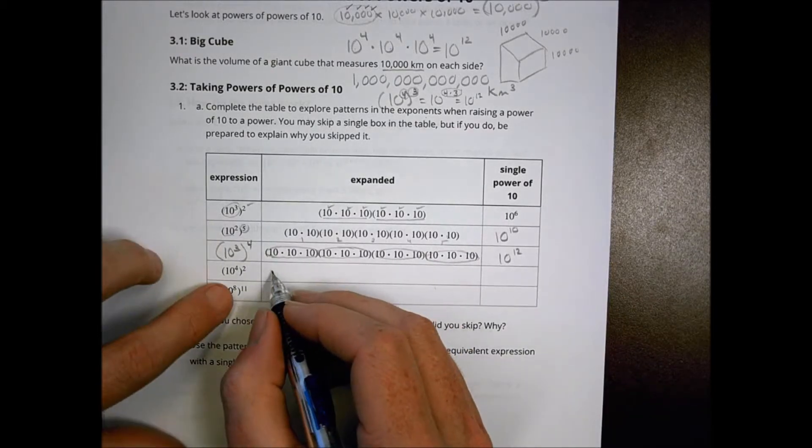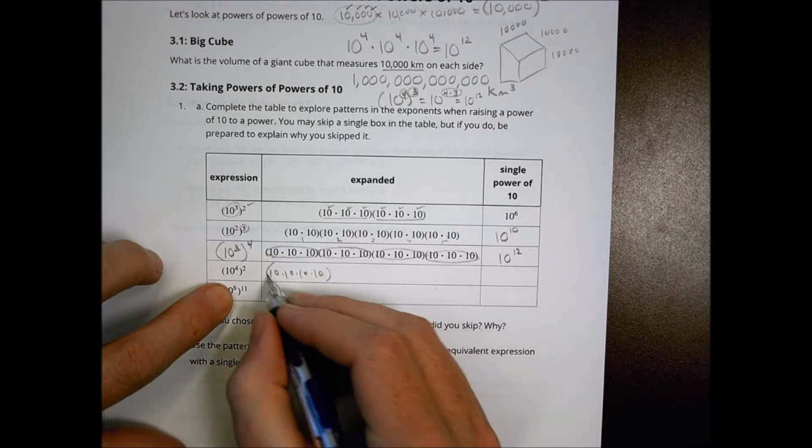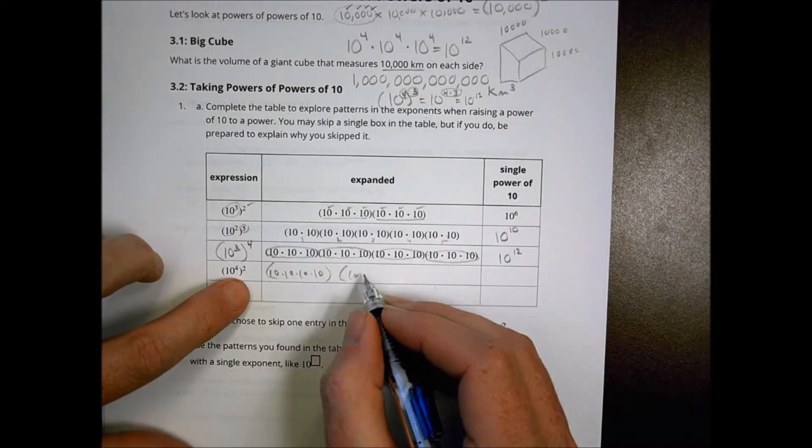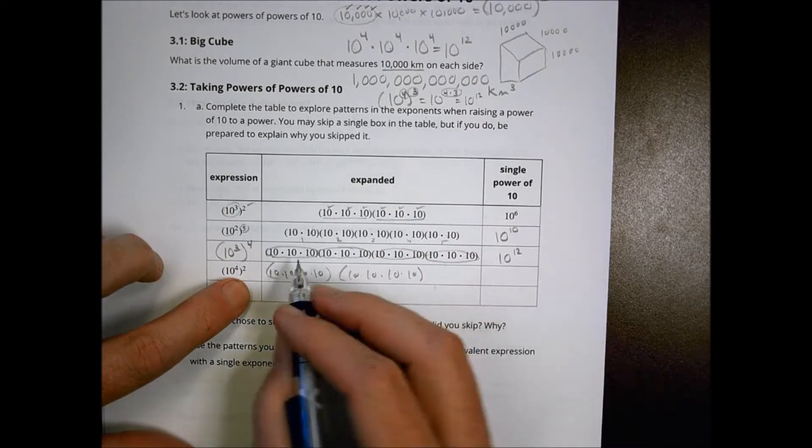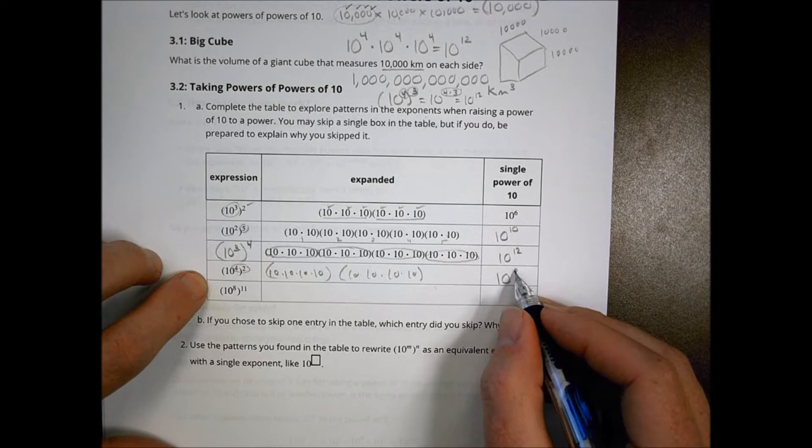Here, I'm going to make groups of 4 tens: 1, 2, 3, 4. I'm going to make two of those groups: 1, 2, 3, 4. So in total, I have 4 times 2 is 8. This becomes 10 to the eighth power.